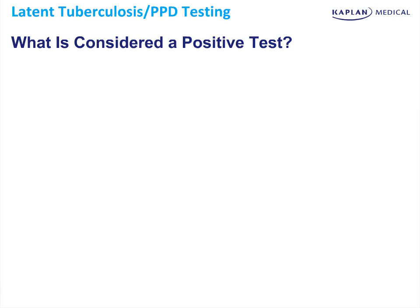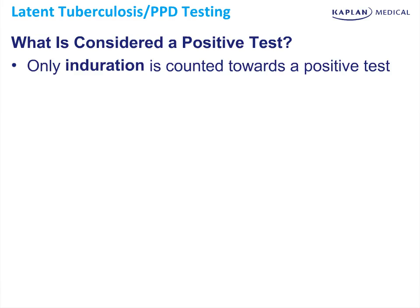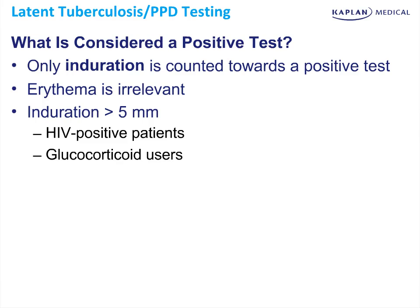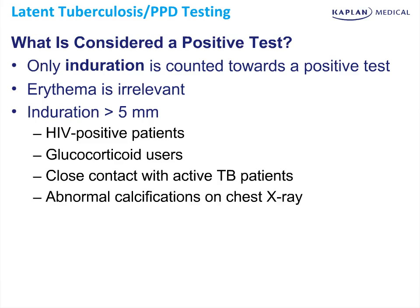What is considered a positive test? Induration is counted as positive — erythema alone is irrelevant; you must have raised, indurated skin. Induration greater than 5 mm is considered positive in HIV-positive patients, glucocorticoid users, close contacts with active TB patients, those with abnormal calcifications on chest x-ray, and organ transplant recipients.